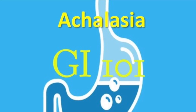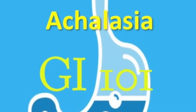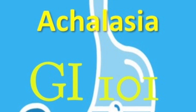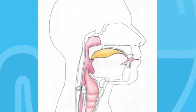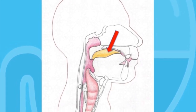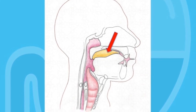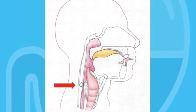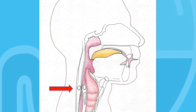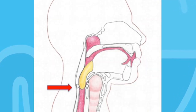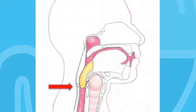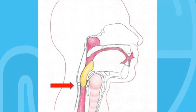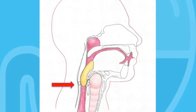Before we do that, why don't we review how a normal swallow should work? After a person puts food in her mouth and chews it, the food bolus will be propelled to the back of the throat by the tongue and soft palate. The pharyngeal muscles propel the food bolus forward towards the upper esophageal sphincter, also known as the cricopharyngeal muscle. The upper esophageal sphincter relaxes and opens, and the food bolus enters the esophagus, after which the upper esophageal sphincter closes. This is called the oropharyngeal phase of the swallow.